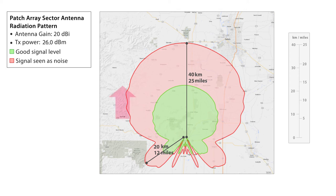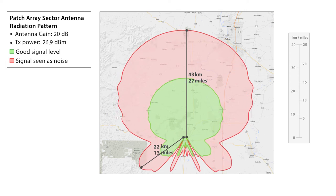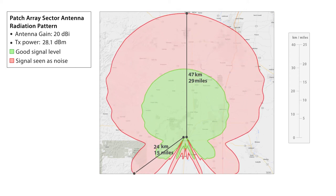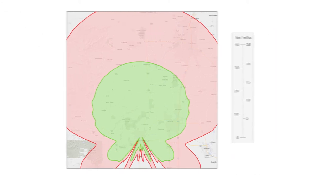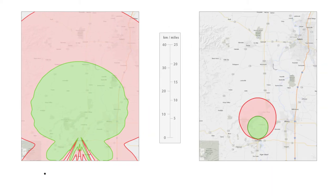You can see when we turn up TX power, your coverage area grows, as well as the total signal propagation as noise. Now let's look at our lower gain symmetrical horn antennas with no side lobes. You can clearly see how it's capable of rejecting noise by acting as a natural filter.